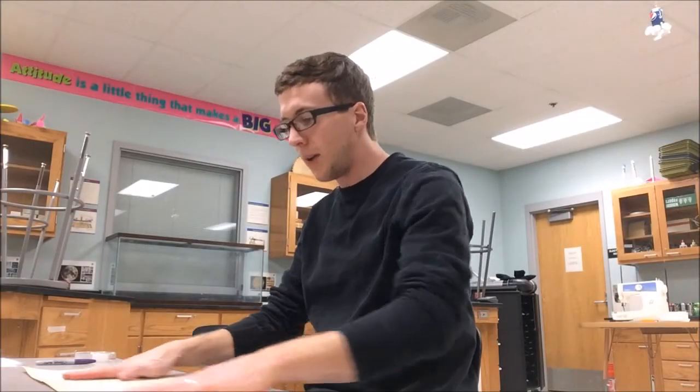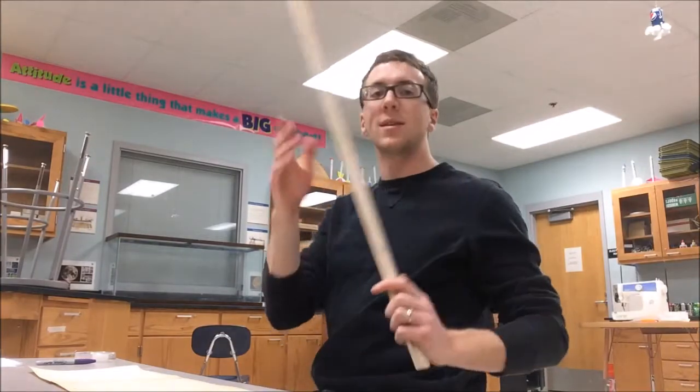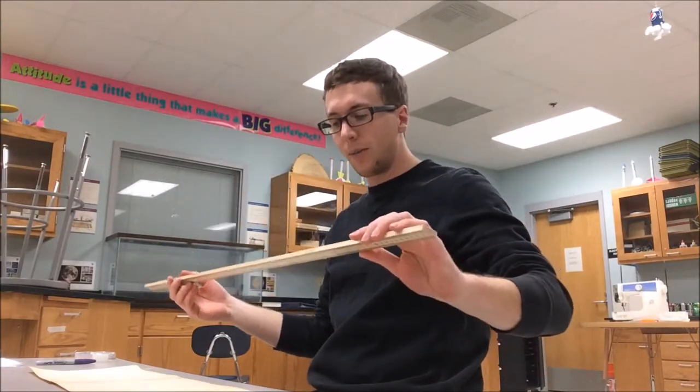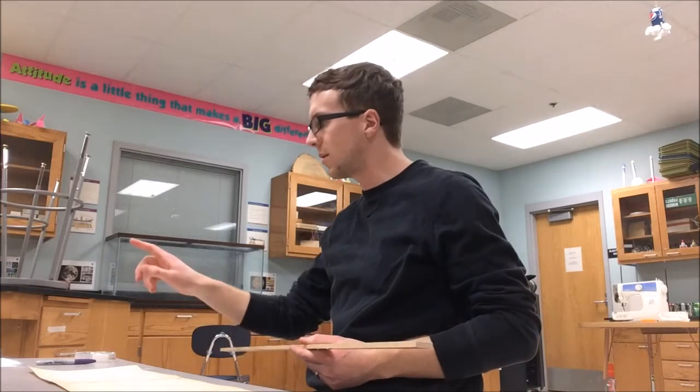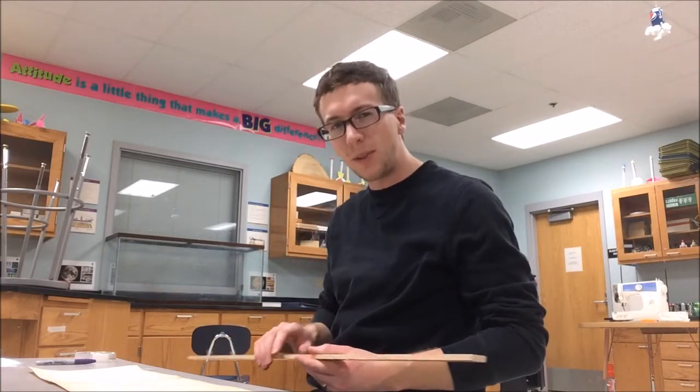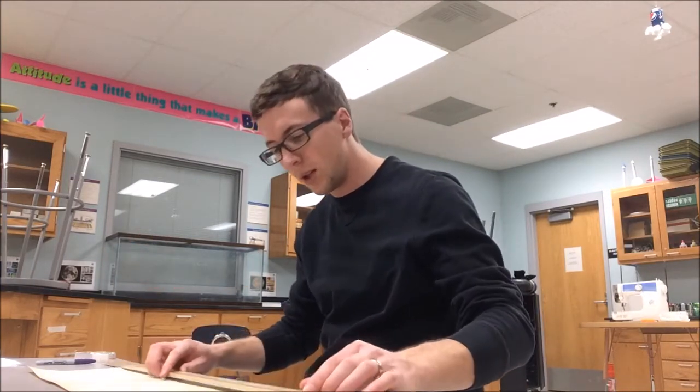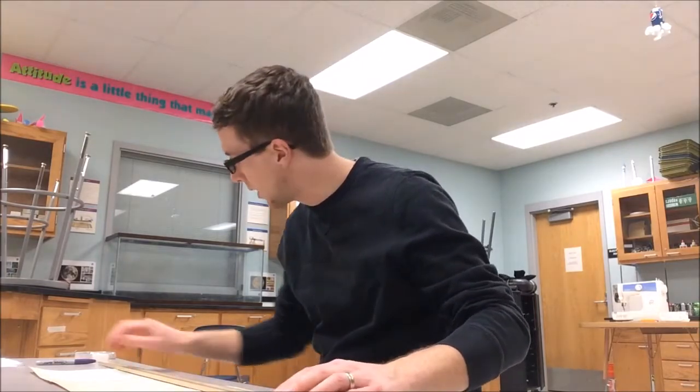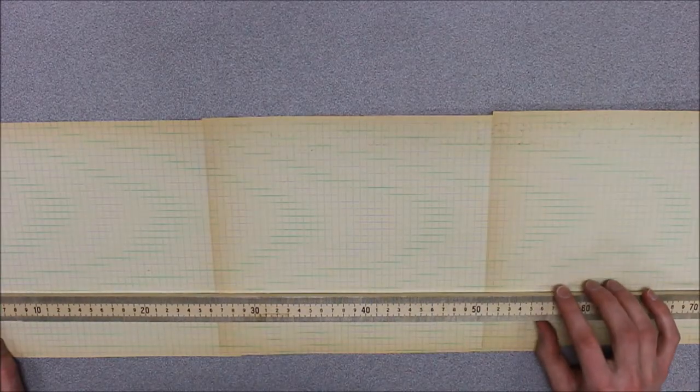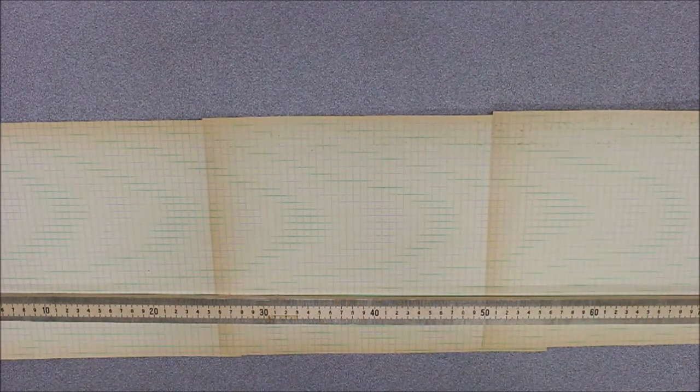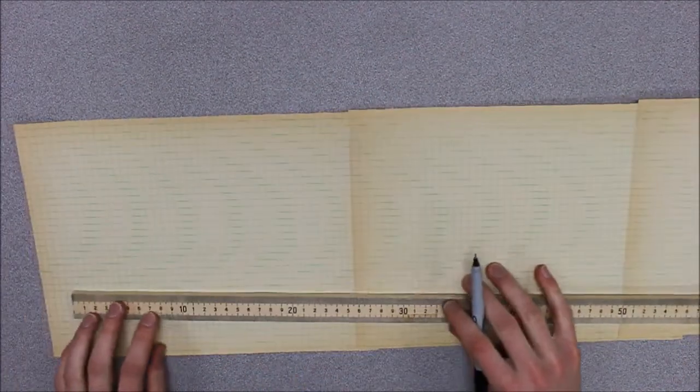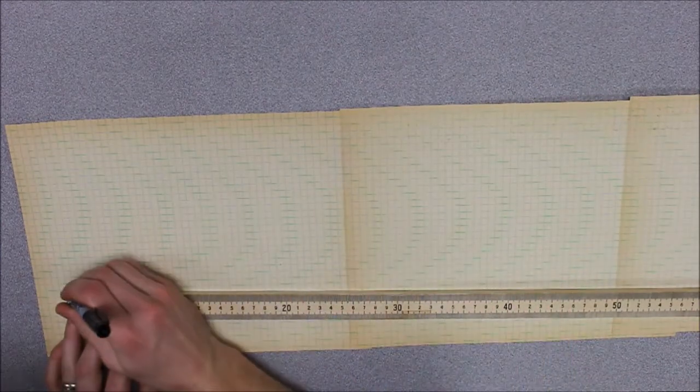Well, now that we have our graph paper laid out the correct length, the next thing we need is a ruler. My constraint for the length is 50 centimeters, so I'm going to find a line that I want to follow and make a starting point.